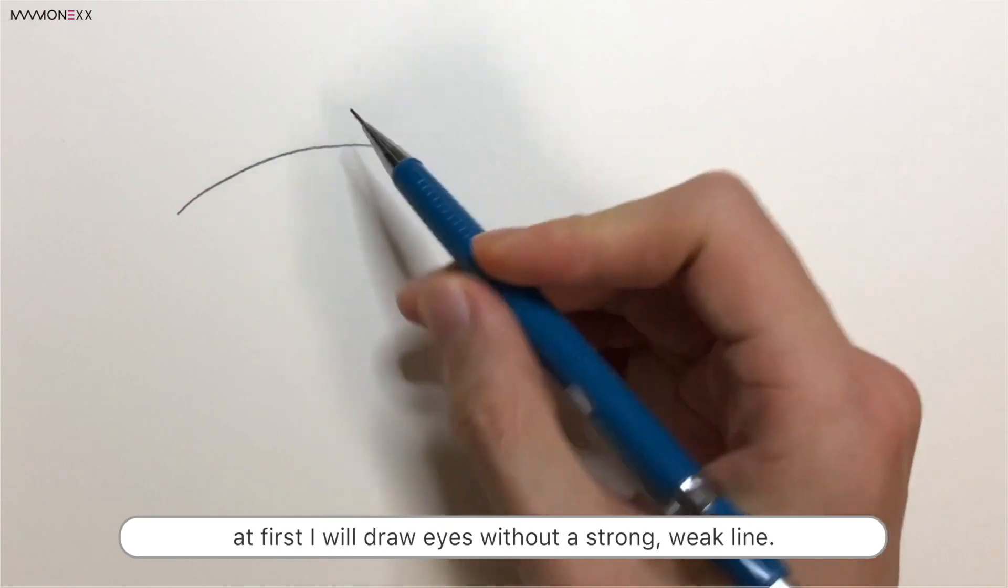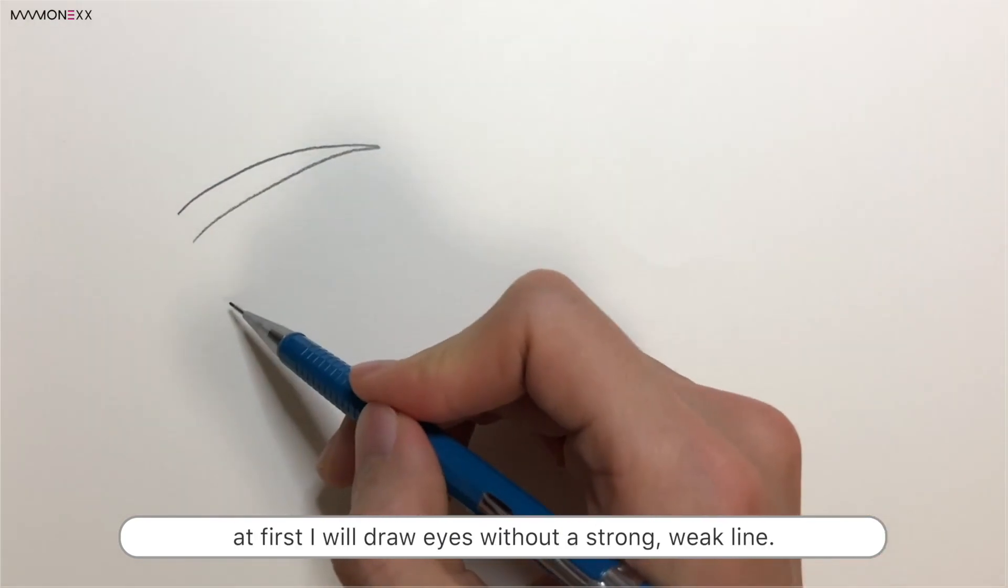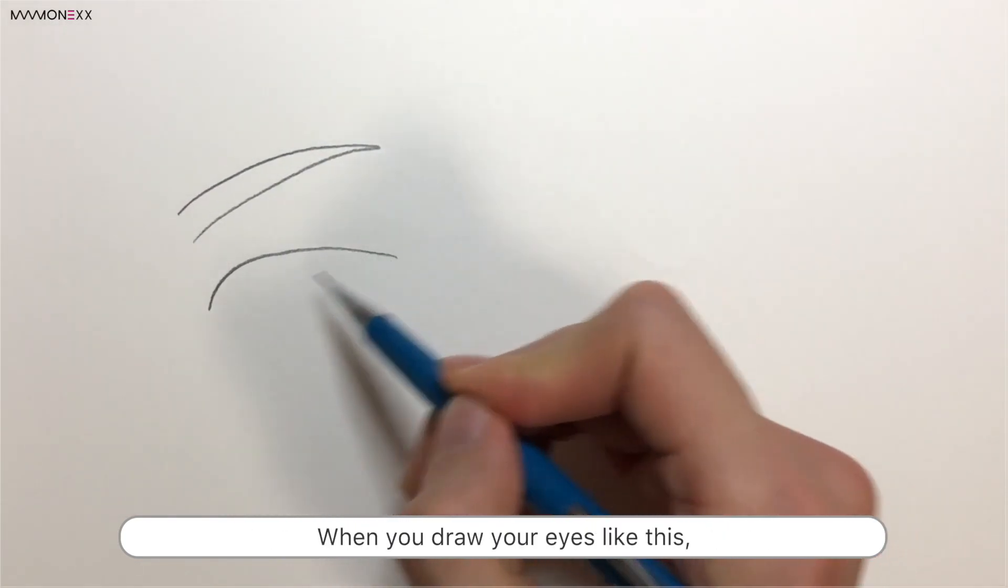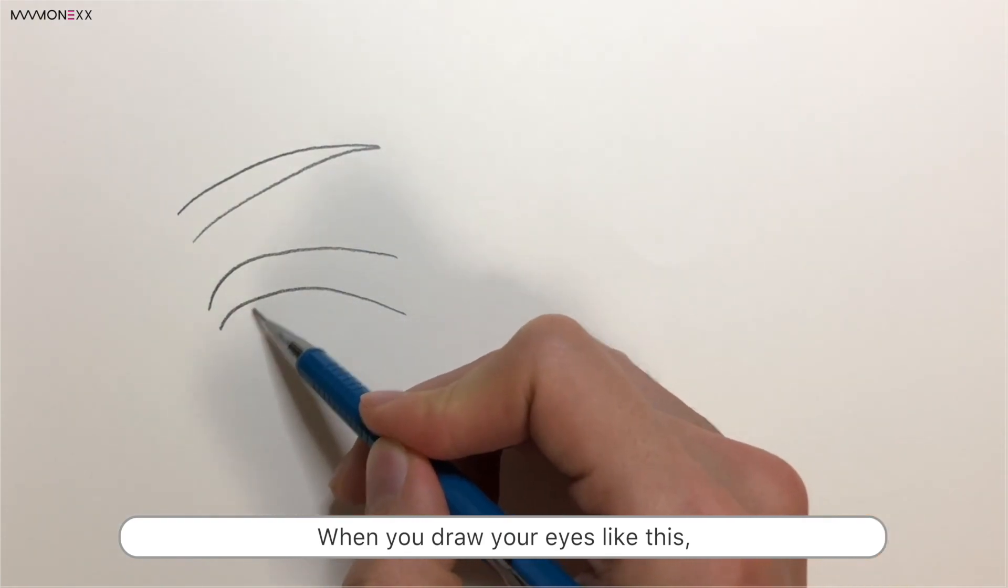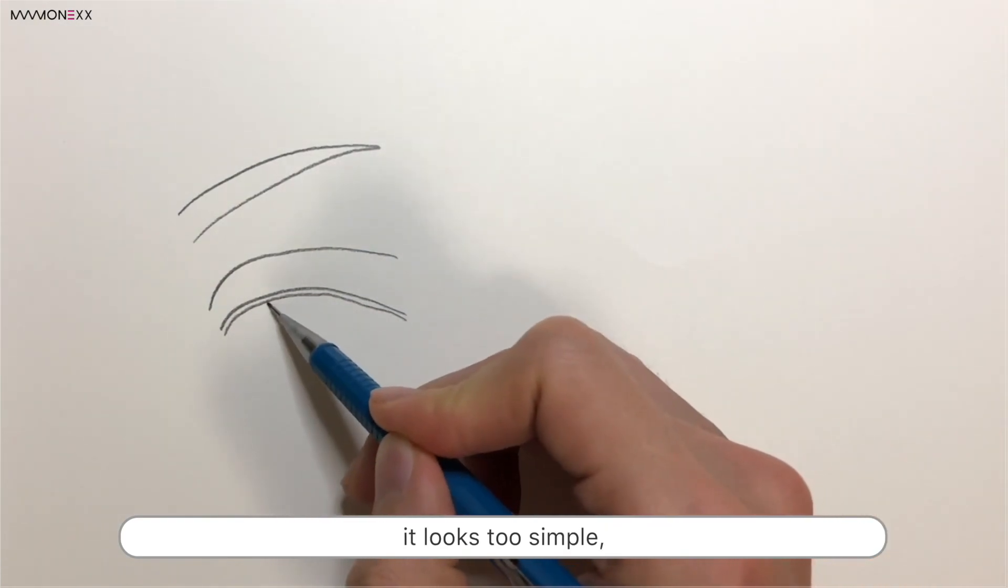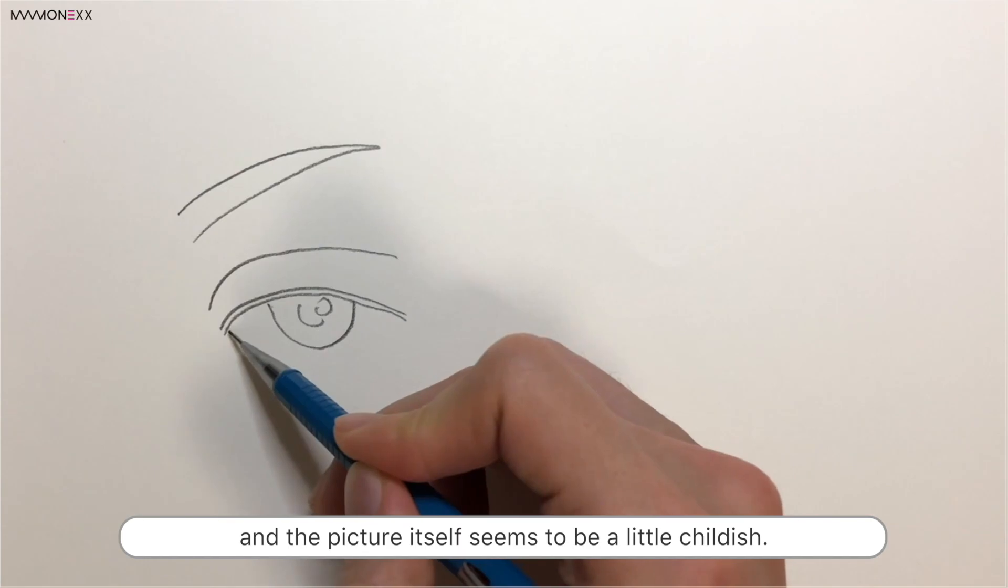For example, at first I will draw eyes without a strong weak line. When you draw your eyes like this, it looks too simple and the picture itself seems to be a little childish.